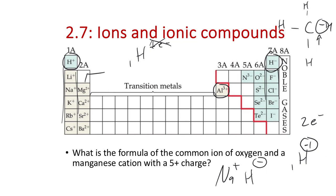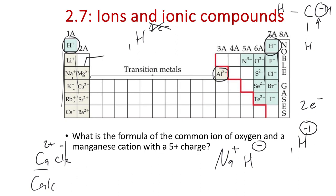Cation nomenclature is simple: it's just the name of the metal followed by 'cation.' When naming ionic compounds, it's always the cation name followed by the anion name. For example, CaCl₂ becomes calcium chloride—calcium is Ca²⁺ and we have two chloride ions to balance out the charge. Compounds must be charge-neutral, so a plus two and two minus ones balance to zero. We don't need to say 'dichloride' because the known charges dictate the stoichiometry—the ratio of ions relative to each other.